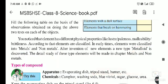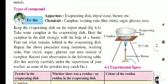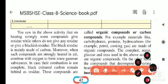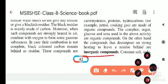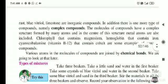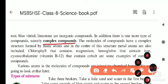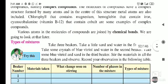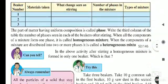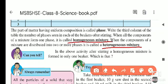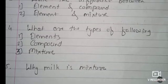Next, the types of compounds: compound types are organic compounds (also called carbon compounds), inorganic compounds, and complex compounds. For types of mixture: there are two types — homogeneous mixture, which has only one phase, and heterogeneous mixture. These are the types of element, compound, and mixture.